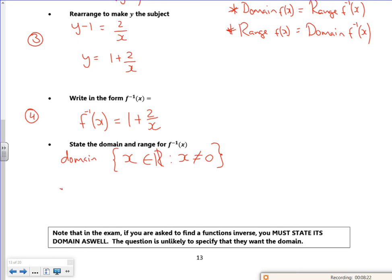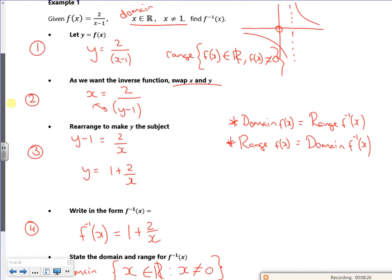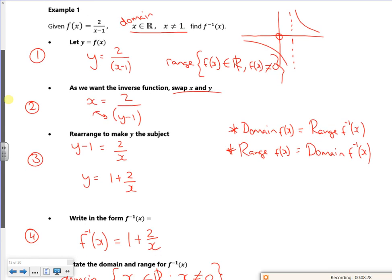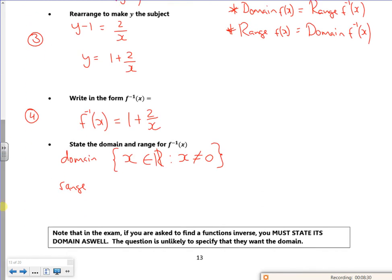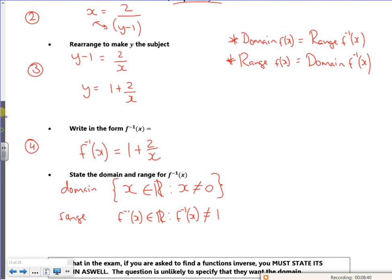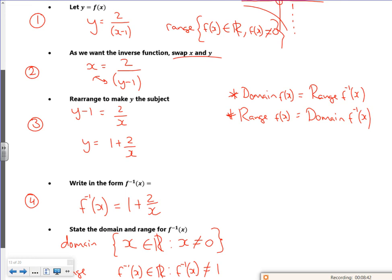And the range of the inverse is the domain of the original function, which was not equal to 1. So f to the minus 1 of x belongs to the real numbers, but the y values of the inverse graph aren't equal to 1.